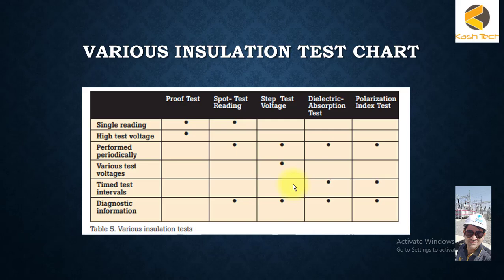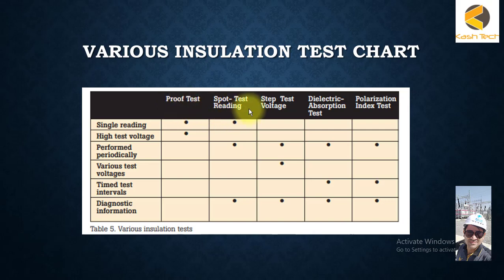We will analyze various installation tests and when they should be done. Here we have a table with columns and rows covering the following test types: proof testing, spot test reading, step voltage, dielectric absorption test, and polarization index.